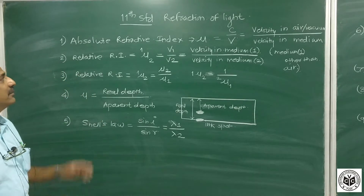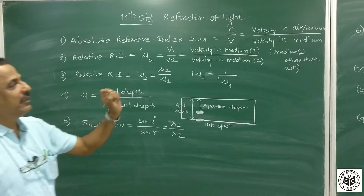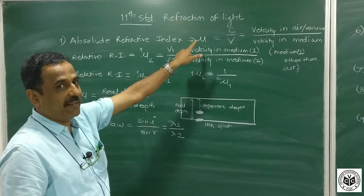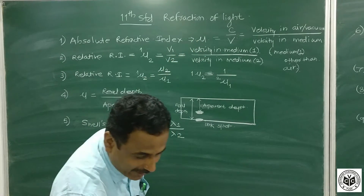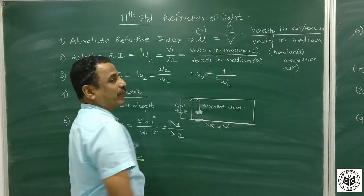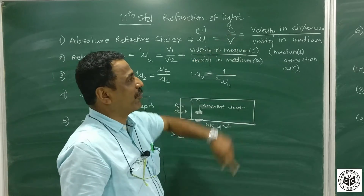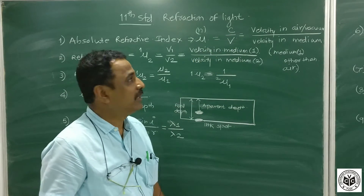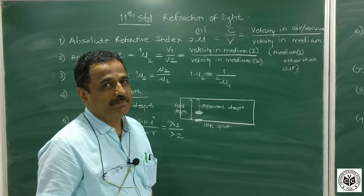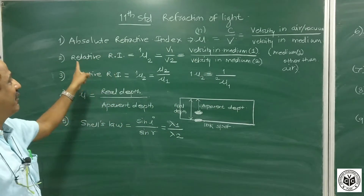Absolute refractive index: when it is mu — sometimes written as n in many books — but generally in 11th and 12th it is written as mu. Here, c is the specific name for velocity of light in air or vacuum, and v is the velocity of light in any other medium. This ratio c upon v is the absolute refractive index.